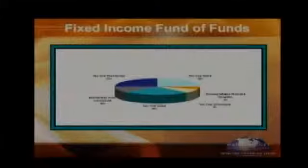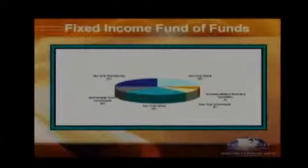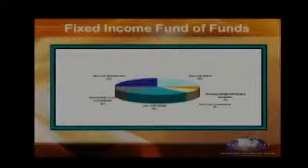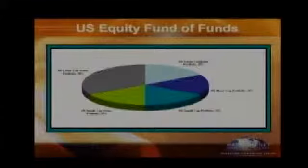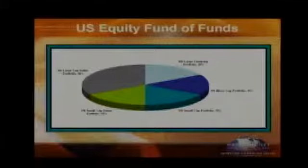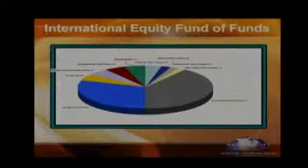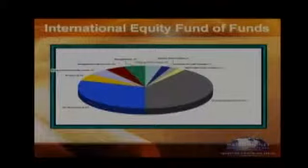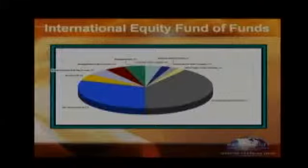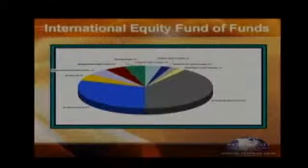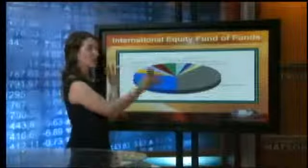For example, a fixed income fund of funds has a fund for each portion: one-year fixed income, five-year global treasuries, five-year government, and two-year global — each a structured market fund. The same applies to US equities, with portions allocated to large cap, large companies, micro cap, small US, and small value — each a structured market fund. This is repeated in the international portion as well: international value, small value, Japanese, emerging markets, and emerging markets value. All of this is contained within one fund, so you get better diversification in one package.